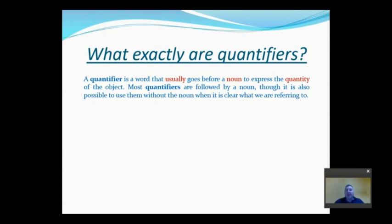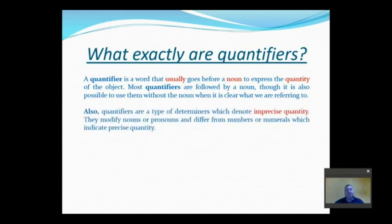Also, quantifiers are a type of determiners which denote imprecise quantity. They modify nouns or pronouns and differ from numbers or numerals which indicate precise quantity. They modify our nouns and pronouns. On that way, they differ from numbers.